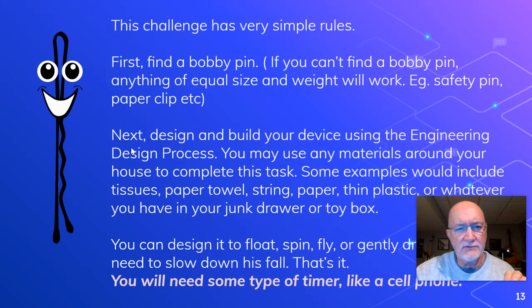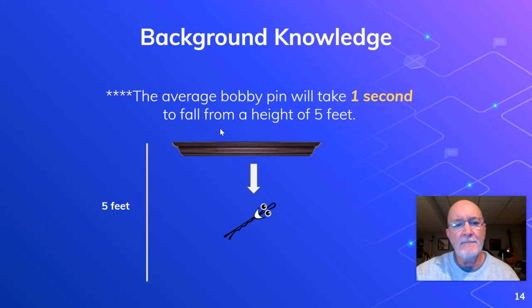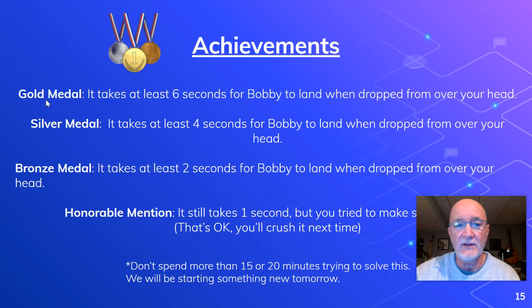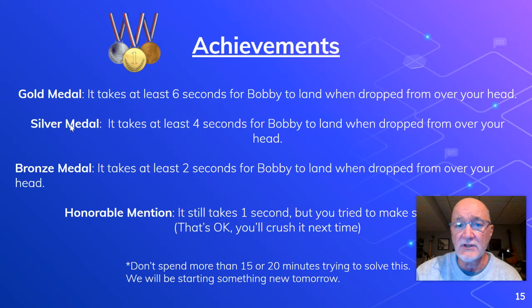Here's typically what we're talking about: a height of about five feet. Normally, without any type of device to slow him down, it takes about one second for him to fall. So what I want to see you do is make something, attach it to Bobby, so that it takes longer than one second to fall. Here are the achievements: if you keep him in the air for at least six seconds, you get yourself a gold medal. Four seconds earns you a silver medal. Two seconds earns a bronze medal. If it still takes one second for him to fall, you'll get an honorable mention — that's okay, you'll crush it next time. I don't want you to spend days and days on this, because we've got Spark tomorrow, and I want to see your design and what you did today.